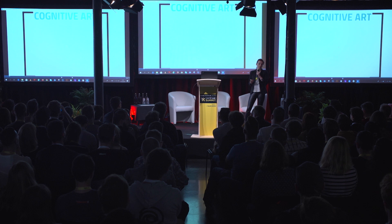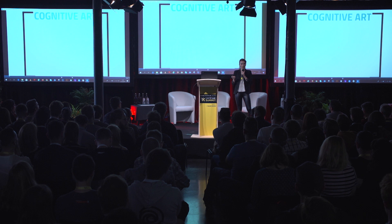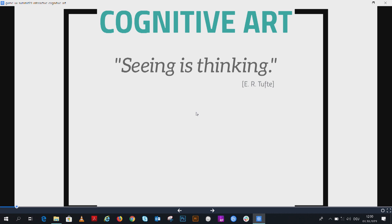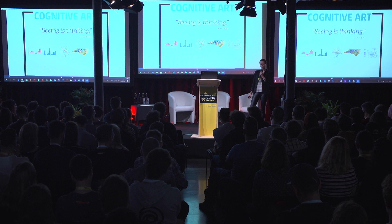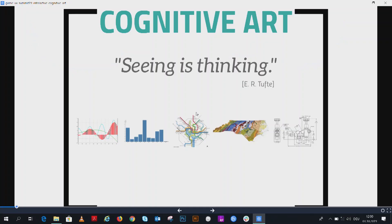Let's demystify the term cognitive art. Before we do, I'll start with a short quote: "Seeing is thinking." It sounds like a trivial horoscope quote, but stay with me and everything will make sense. Cognitive art is a type of visualizing information — like maps, graphs, charts, blueprints — whatever is there to inform users or human beings. Depending on who is dealing with the subject, they can be called informational images, data visualization, and so on.